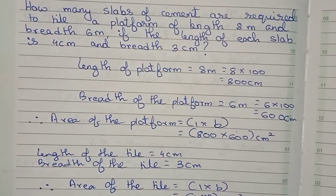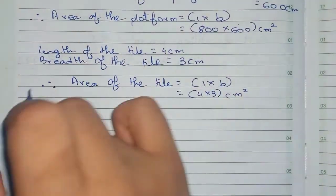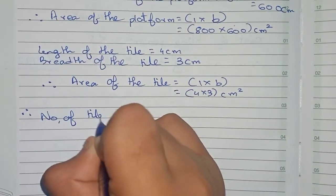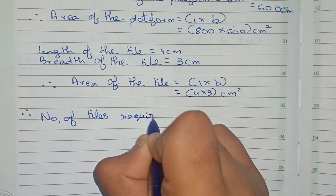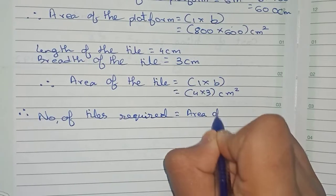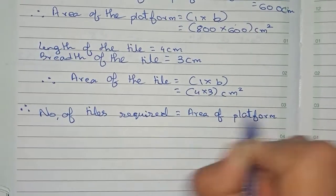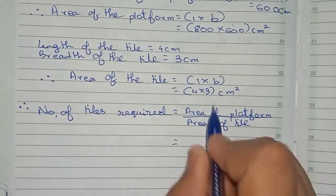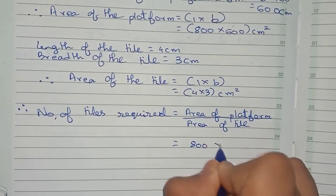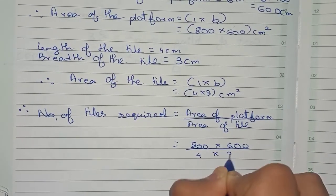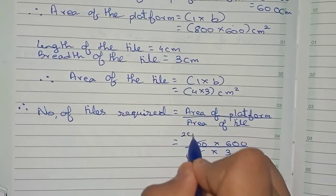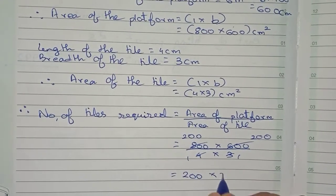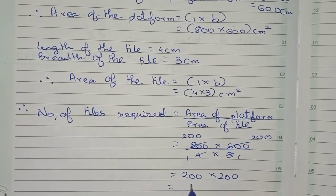The area of the tile equals length into breadth, which is 4 into 3, equal to 12 centimeter square. Therefore, the number of tiles required equals area of platform divided by area of tile — that is 800 into 600 divided by 4 into 3. Cutting 4 into 800 gives 200, and 3 into 600 also gives 200. So it equals 200 into 200, which is equal to 40,000.